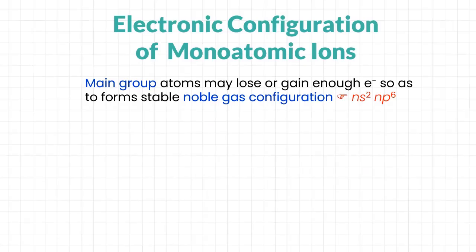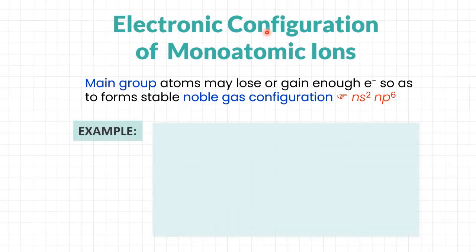Apart from neutral atoms, you also need to know how to write electronic configurations of monoatomic ions. Ions form to achieve the stability of noble gas configurations of ns² and np⁶. If it is easier — meaning less energy needed — to remove electrons to achieve stability, we form a positive charge. If it is easier to gain electrons, we form a negative charge. For example, neutral sodium with proton number 11 has the configuration 1s², 2s², 2p⁶, 3s¹.